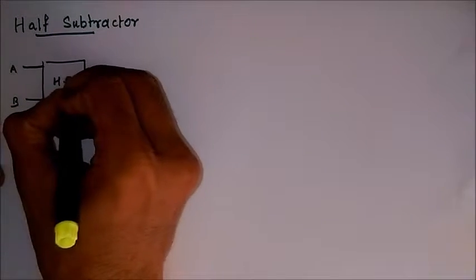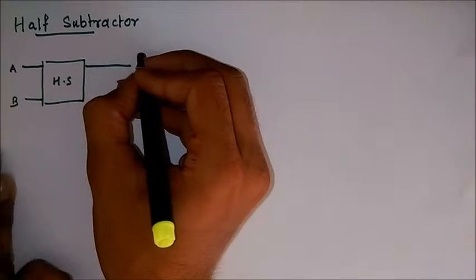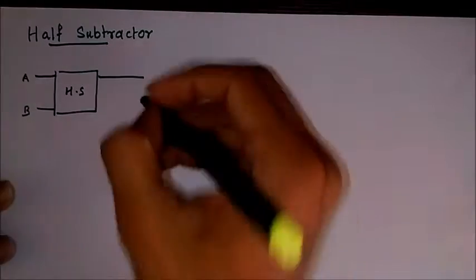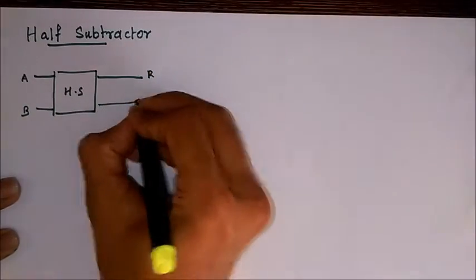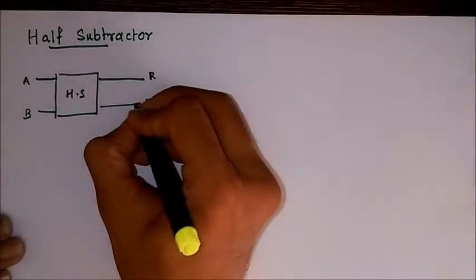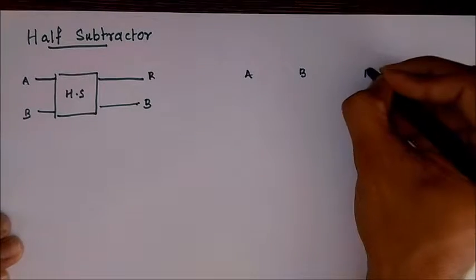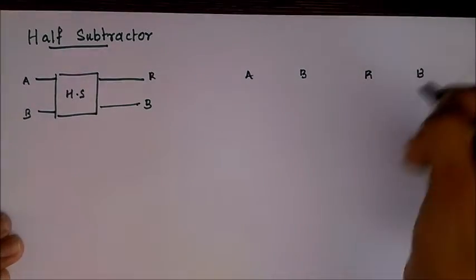There will be a difference which we'll mark as R and a borrow B. Let's move on to the truth table. There will be two inputs and R and B will be the two outputs. Zero zero, one one, zero one, zero one.